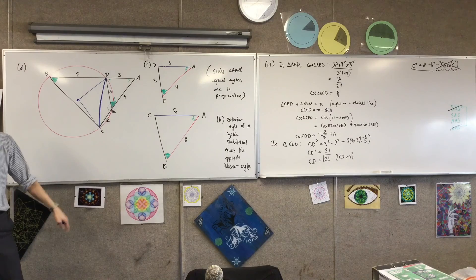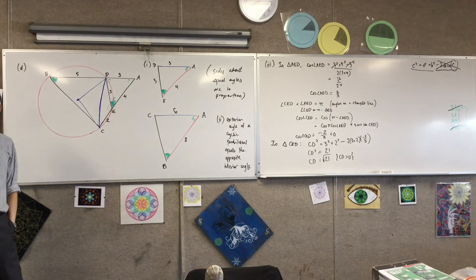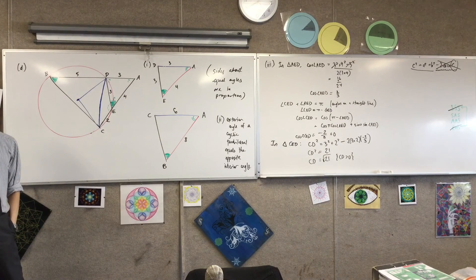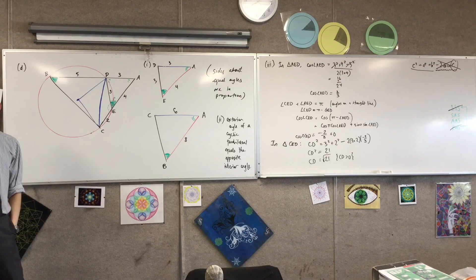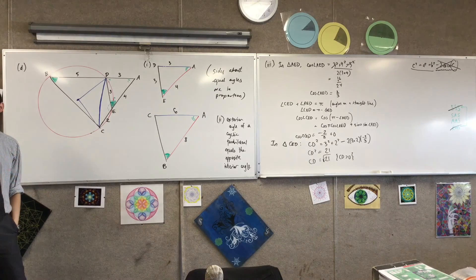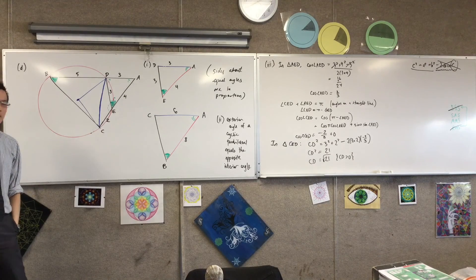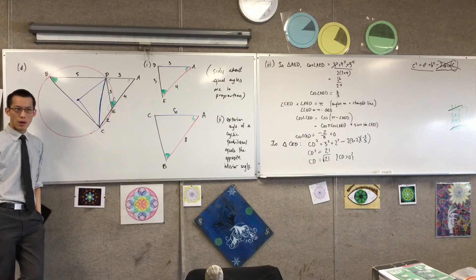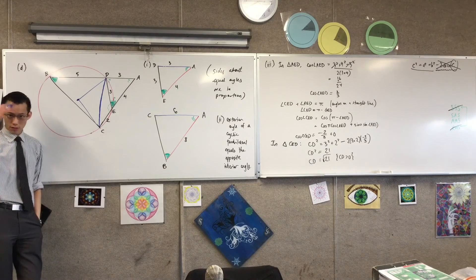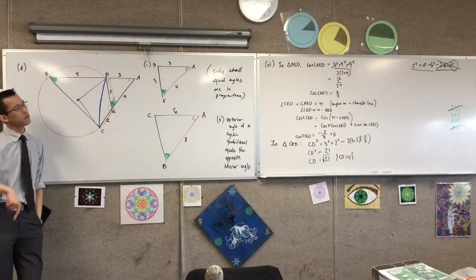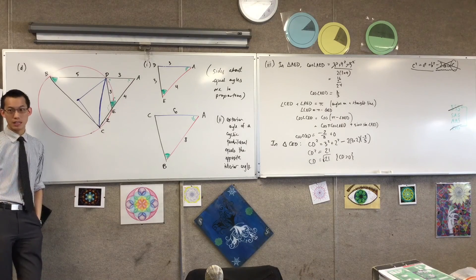Is it alright if your exact value has like a cosine sign? Do you mean for this last part? Yeah. You would get some marks, but I don't think you'd get all of them because you don't need to. You can get it as an exact number without any trig functions in it.